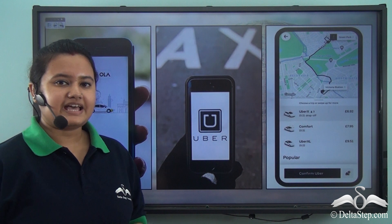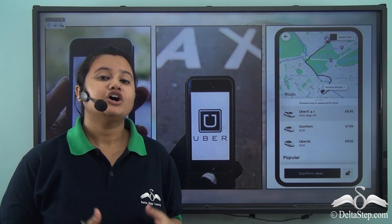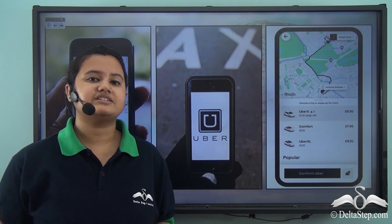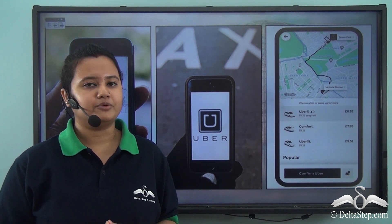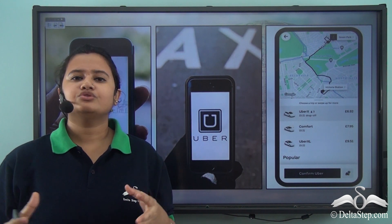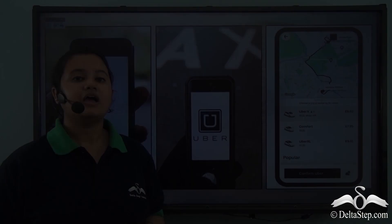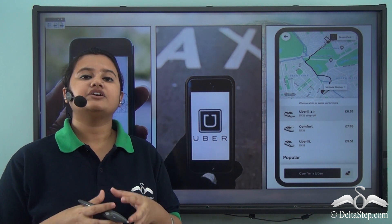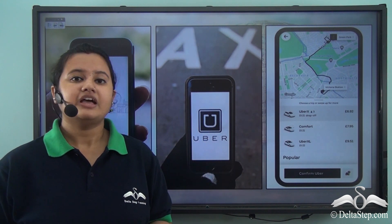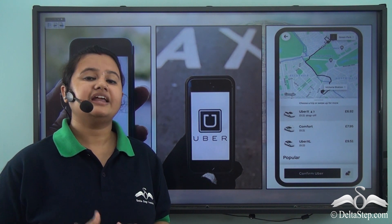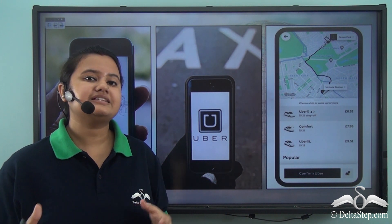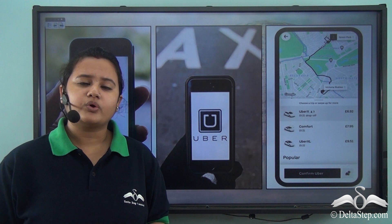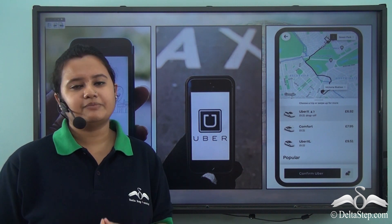Have you ever used apps like Ola, Uber, etc. to book a car? How do you do it? You firstly enter your current location and then your desired destination and finally confirm your ride. Now how do the drivers know your location? A high level technology is built into these apps that helps the driver to locate you, enabling the driver to reach you in a few minutes. Now what is this location of a place and how do we determine it?